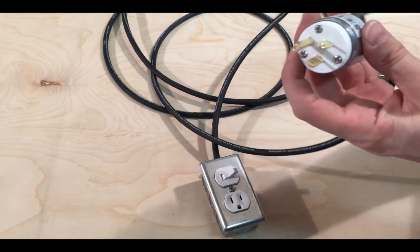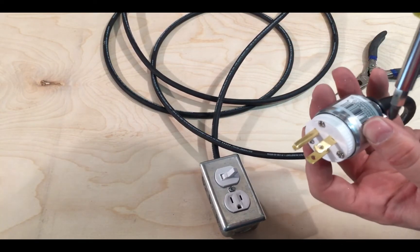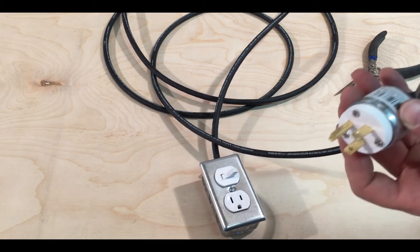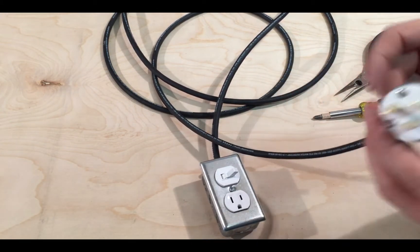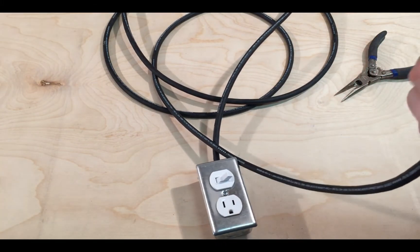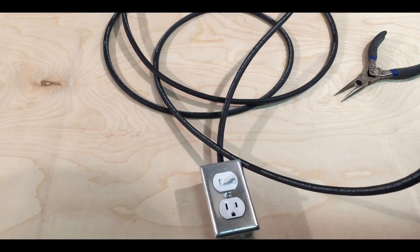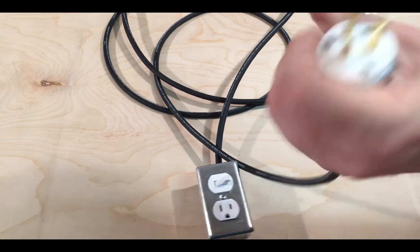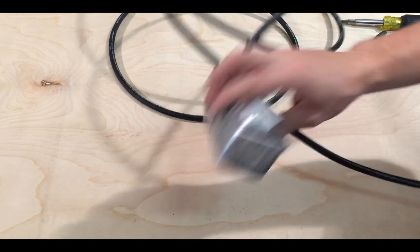All right, tighten this. Make sure that cord don't pop out like it did, or at least the grommet popped out. All right, and it's assembled. Finally, box done, power end done.